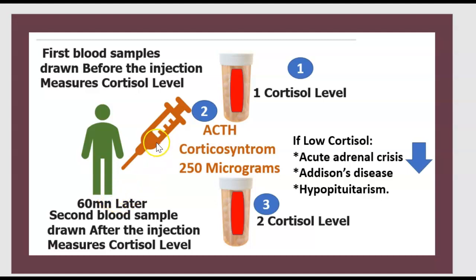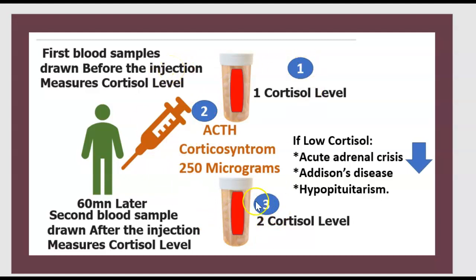Then we give an injection of ACTH — cosyntropin — 250 micrograms. 60 minutes later, we draw a second blood sample after the injection and measure the cortisol level again. Between both samples, there is one hour.